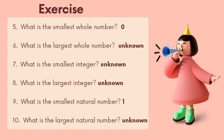What is the smallest integer? Unknown — negative infinity. What is the largest integer? Unknown — positive infinity. What is the smallest natural number? One. What is the largest natural number? Unknown — it goes to infinity.